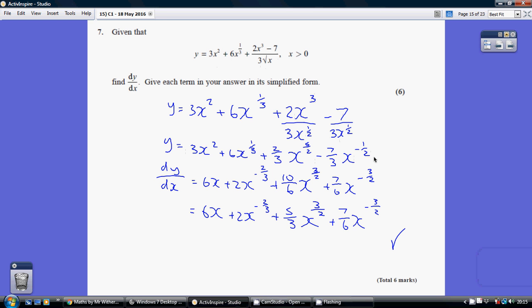We can now differentiate term by term. Remember, you multiply by the current power and reduce the power by 1. So this becomes 6x. This becomes 2x to the minus 2 thirds. And this becomes 10 over 6x to the 3 over 2.